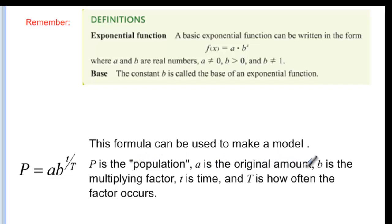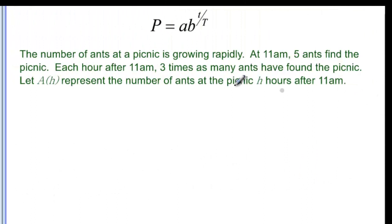A is the original amount that we started with, b is the multiplying factor, and t, little t, is time, and big T is how often this factor actually occurs. Let's look at an example.